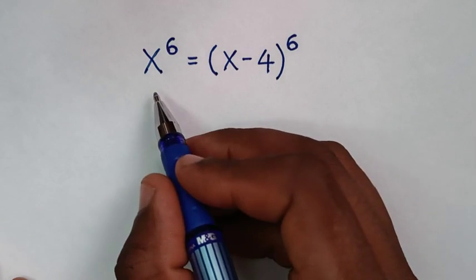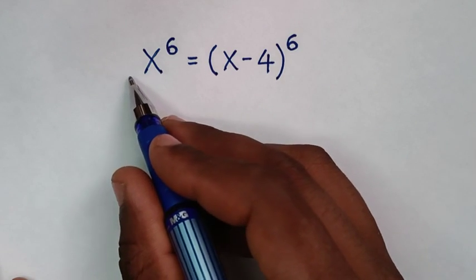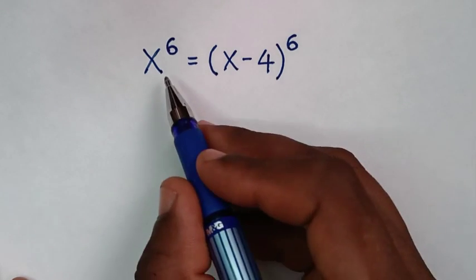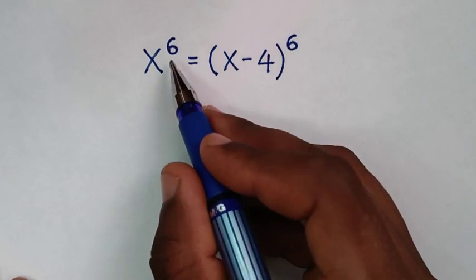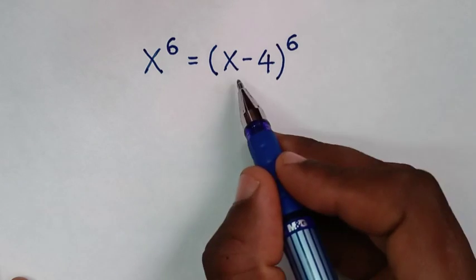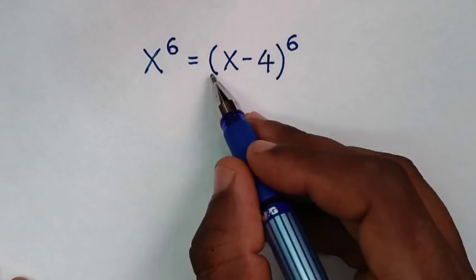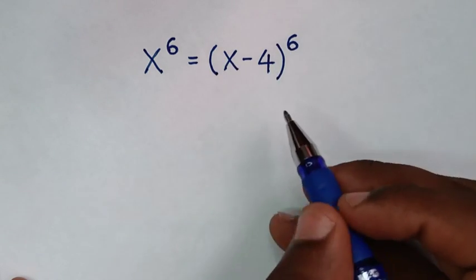Hello, you are welcome to solve this math problem, which is x power 6 is equal to x minus 4, brackets, power 6.